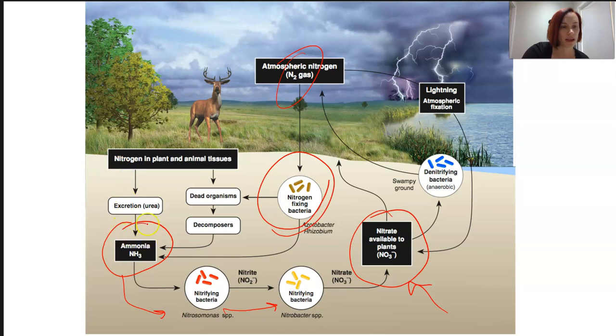Now, ammonia is also added to by dead organisms and just excretion of waste. Funnily enough, though, lightning also contributes to nitrogen fixation and can turn the N2 gas into a form of nitrates.